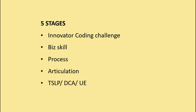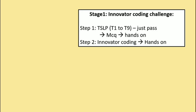Now we will see the stages for the upgradation process. The first stage is the Innovator Coding Challenge. After completing that, you move to Business Skill, then Process Articulation, and then you can choose any one of TSLP, DCA, or UE. We'll discuss each stage one by one.